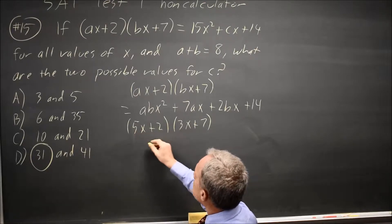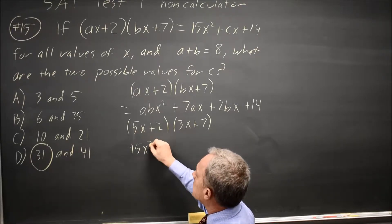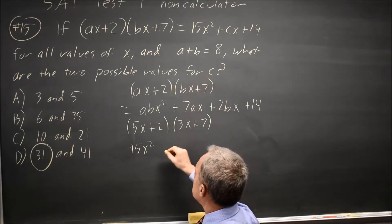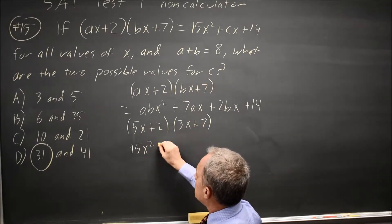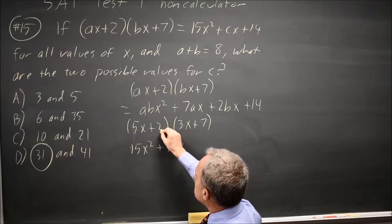FOIL gives us first times first is 5X times 3X is 15X squared, which matches our right-hand side. Outside, 5X times 7 is 35X.